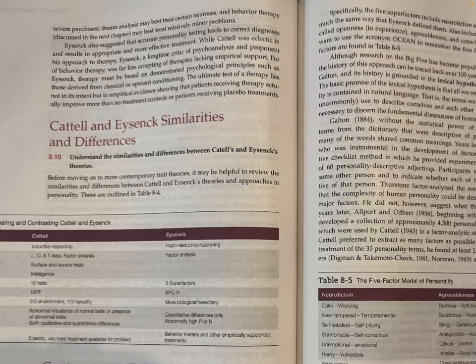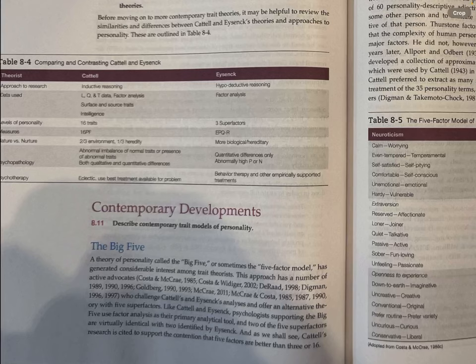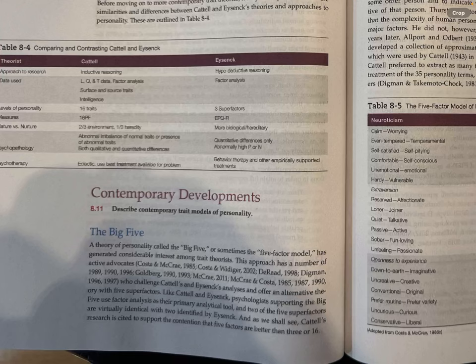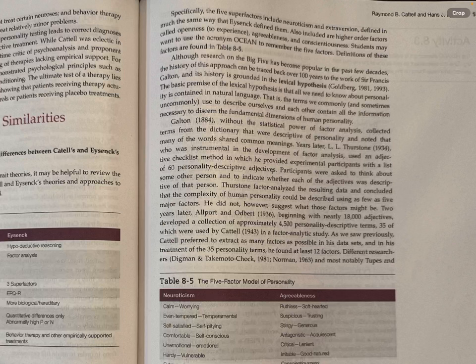Cattell and Eysenck's Similarities and Differences. Before moving on to more contemporary trait theories, it is helpful to review the similarities and differences between Cattell and Eysenck's theories and approaches to personality, as outlined in Table 8-4. Contemporary Developments — The Big Five. A theory of personality called the Big Five, or sometimes the Five Factor Model, has generated considerable interest among trait theorists. This approach has a large number of active advocates who challenge Cattell's and Eysenck's analyses and offer an alternative theory with five superfactors. Like Cattell and Eysenck, psychologists supporting the Big Five use factor analysis as their primary analytical tool, and two of the five superfactors are virtually identical with two identified by Eysenck. Cattell's research also came to support the contention that five factors are better than three or 16.